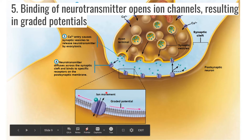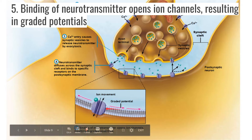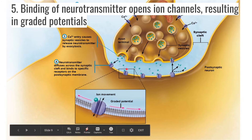Once the neurotransmitter binds, it causes a graded potential — sort of like a mini-action potential. A graded potential is a local change in membrane potential, meaning it changes the electrical charge of just that part of the membrane. We care about this because the local change can trigger an action potential, which is a widespread change. So the neurotransmitter binds, causes a graded potential, which eventually causes an action potential that travels all the way down the neuron.